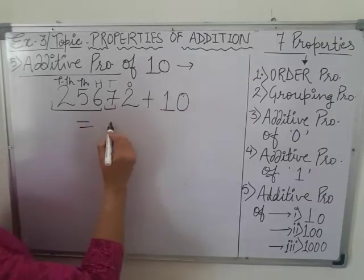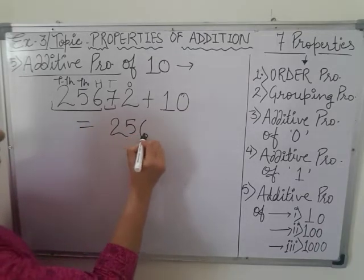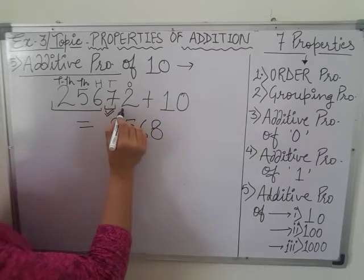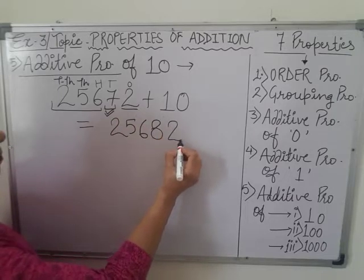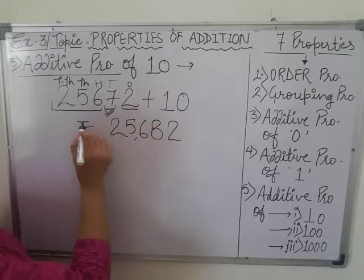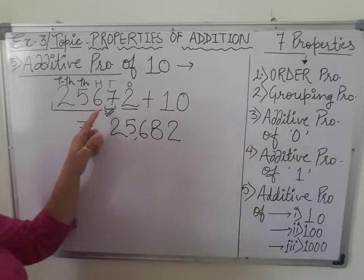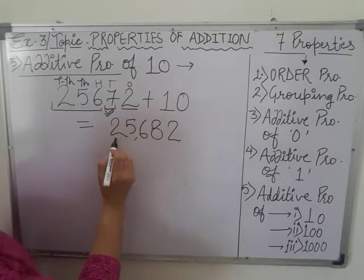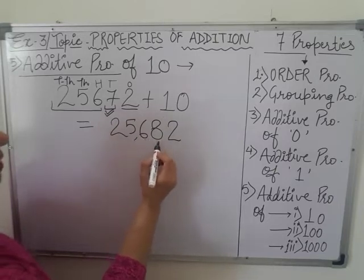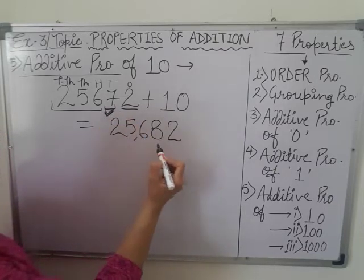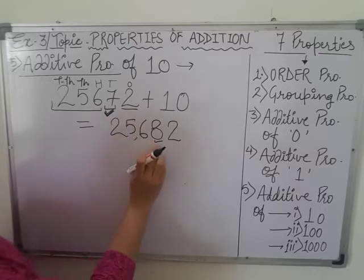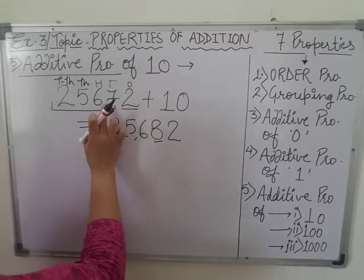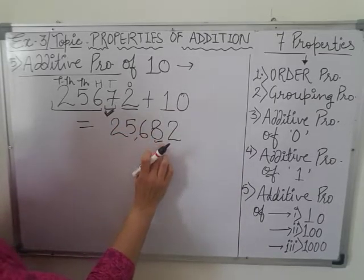These 3 digits will remain similar — 2, 5, 6 — and this digit will increase by 1, so it will be 8 and this will remain similar. Previously, we have 25,672 and by adding 10, we are having 25,682. You can see that change here only in this digit and it is increased by 1. So 7 increased by 1 and we got 8 over here.